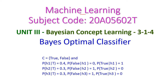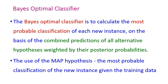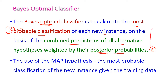In today's machine learning class, we will see the Bayes' Optimal Classifier from the third unit, Bayesian Concept Learning. The Bayes' Optimal Classifier is used to calculate the most probable classification of a new instance, on the basis of the combined prediction of all alternative hypotheses weighted by the posterior probabilities. The classifier uses the MAP hypothesis — maximum-posterior hypothesis — that is, the most probable classification of a new instance given the training data.